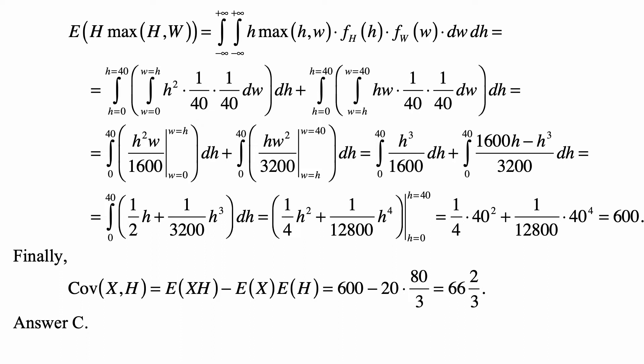But, of course, it's not really going from minus infinity to plus infinity, because we only calculate the integral where the density is positive. And we calculate over two regions separately. So the first part is the integral from h equal to 0 to h equal to 40 of the integral from w equal to 0 to w equal to h.